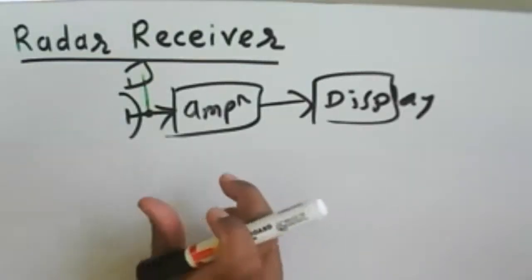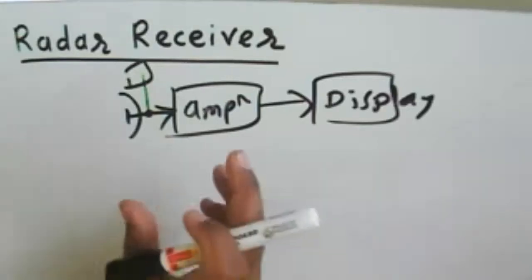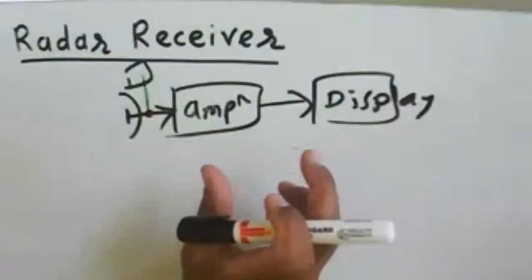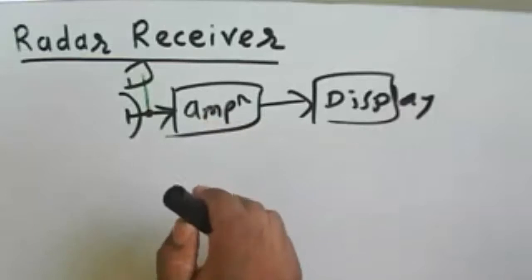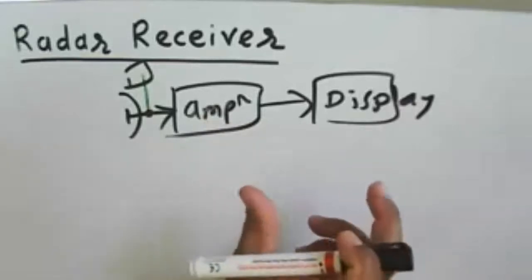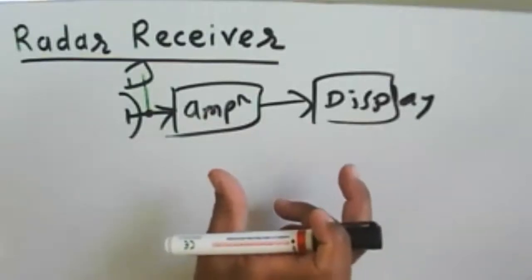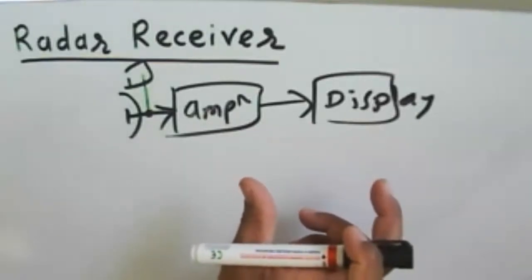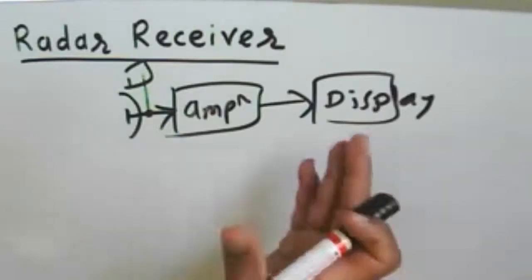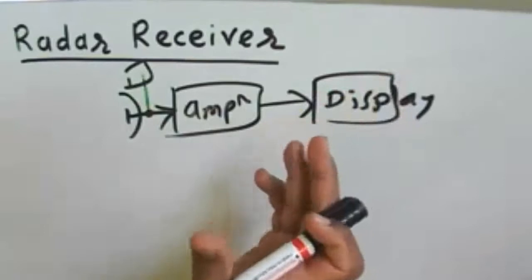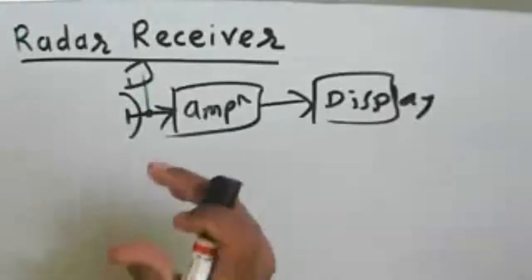If the transmitter is high power, it may damage the receiver components. Limitations in using a low-noise front end are related to the operating bandwidth as well as the sensitivity of the receiver.